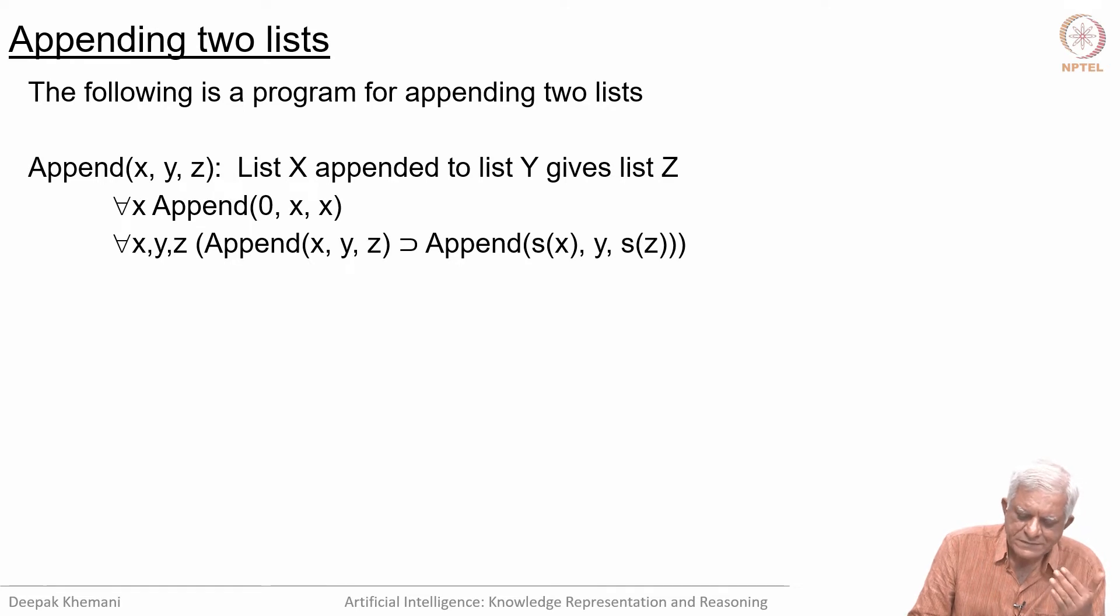The recursive clause says that if you can append X to Y and it gives you Z, then you can look at the successor of X and append it to Y and it will give you the successor of Z.